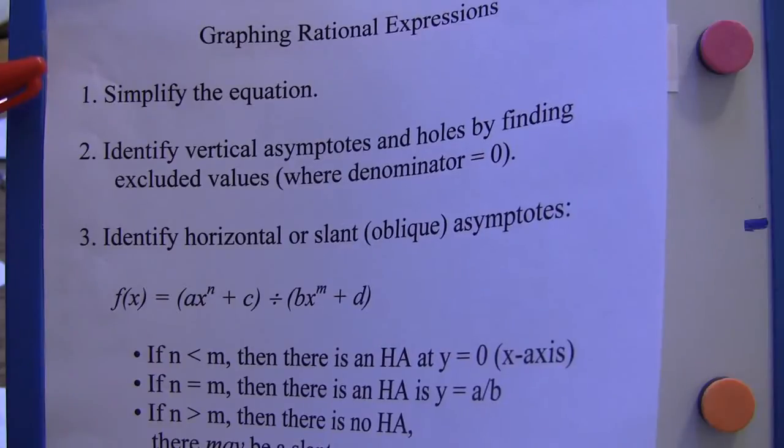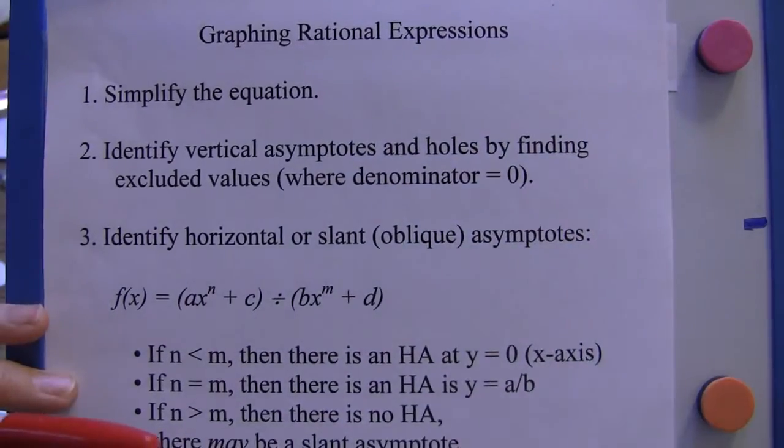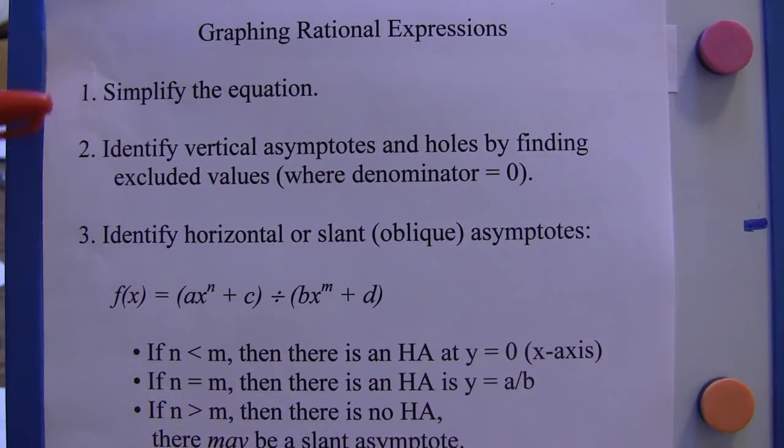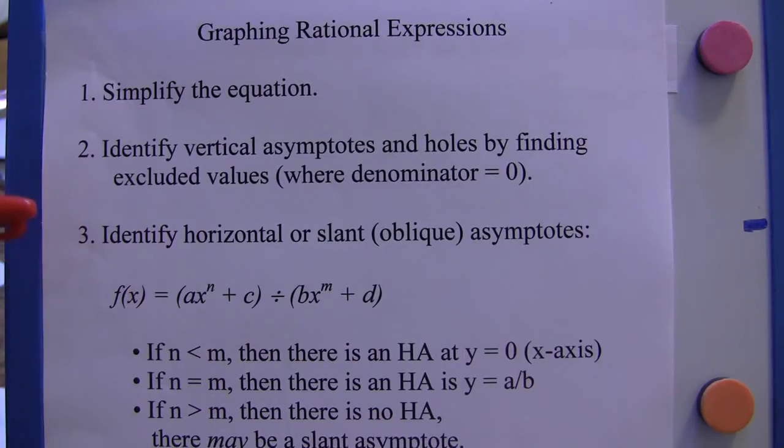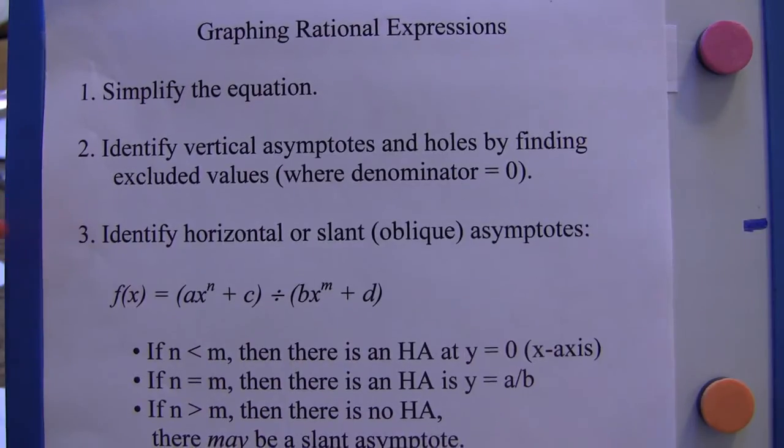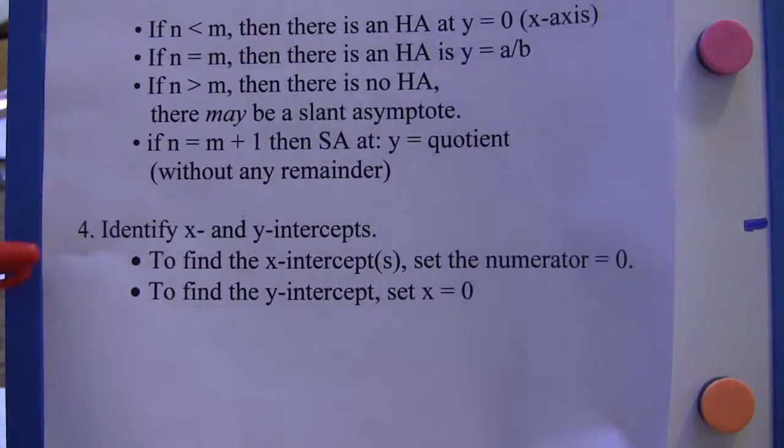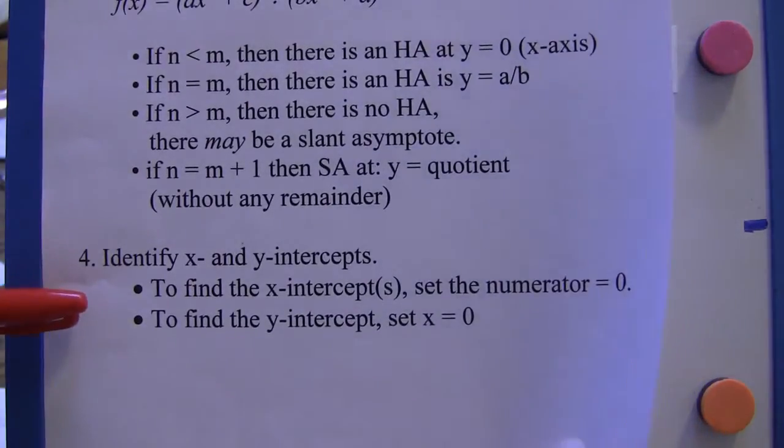The four things to do in graphing a rational expression include simplifying the equation, identifying the excluded values which will give us vertical asymptotes and holes, identifying horizontal asymptotes or slant asymptotes or oblique asymptotes, and then identifying the x and y intercepts.